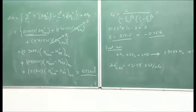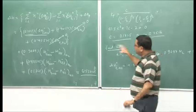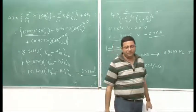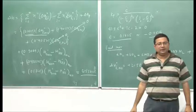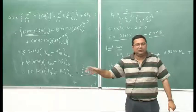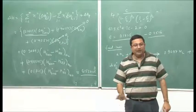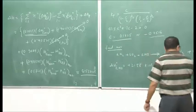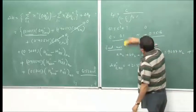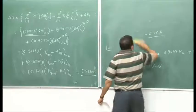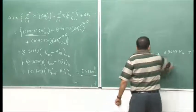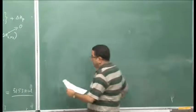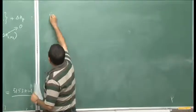One more thing to point out: for estimating Kp we used Gibbs free energy. But many times Gibbs free energy is not available, while enthalpy changes are given. So how do we get Kp if only the enthalpy change is known? For that we use the Clausius-Clapeyron equation.